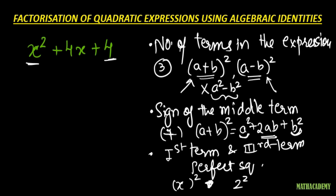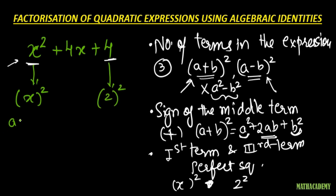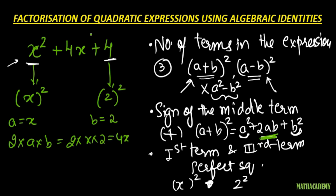Once these three are checked, let us see if the identity (a + b)² is applicable in this particular case. We can write x² as x whole square and 4 as 2². We take a as x and b as 2. According to our identity, the middle term is 2ab, so 2 × x × 2 gives 4x. And we see that 4x is indeed our middle term.